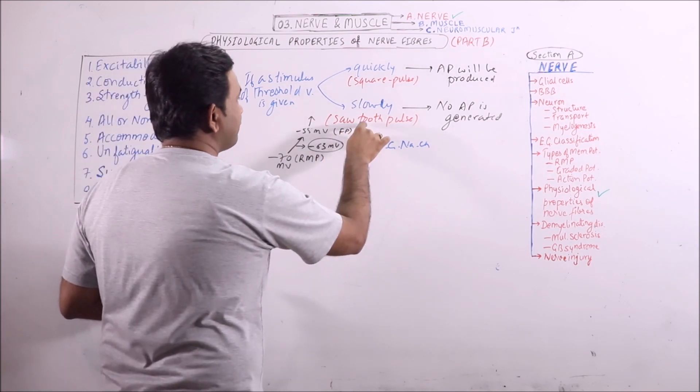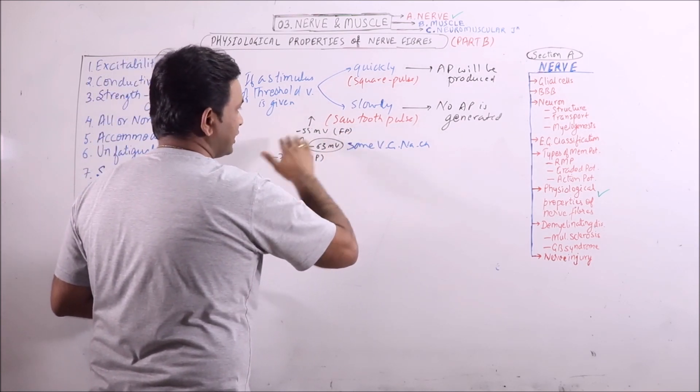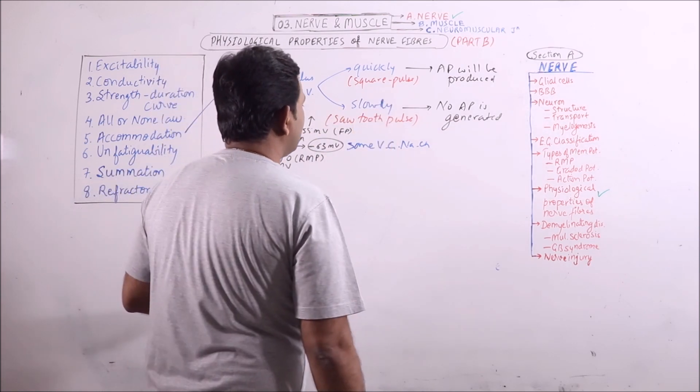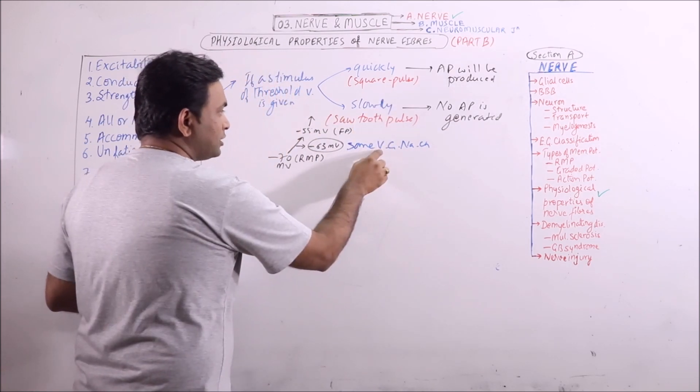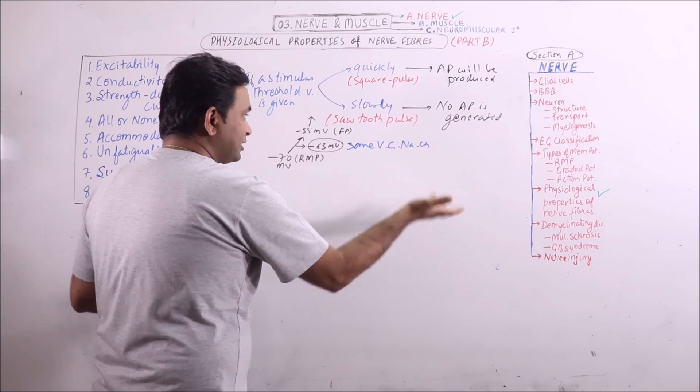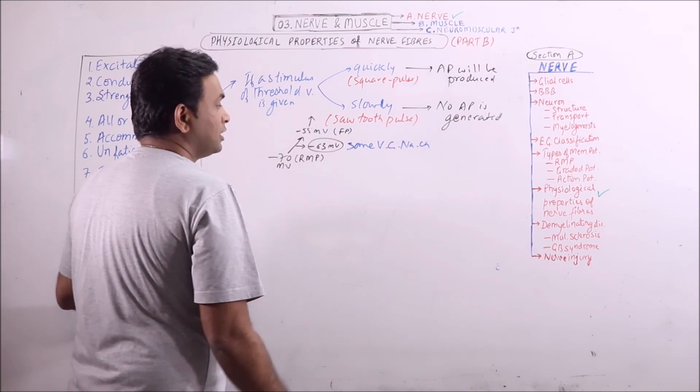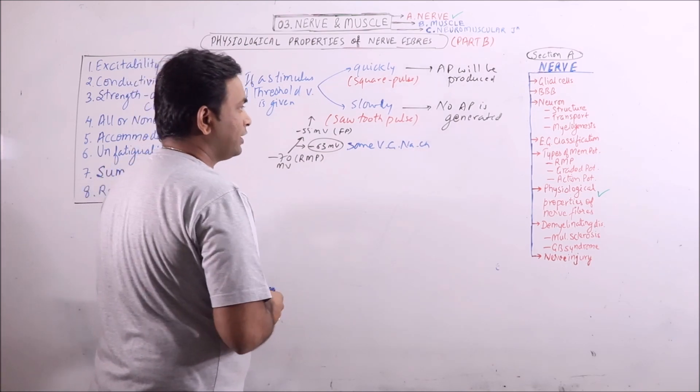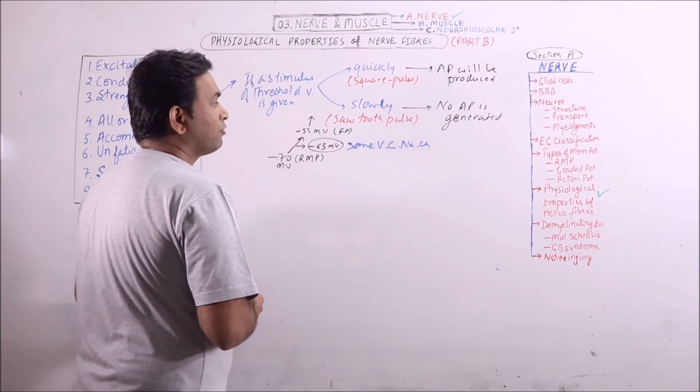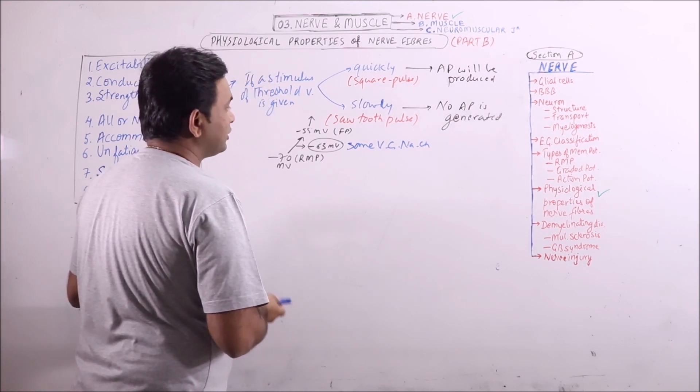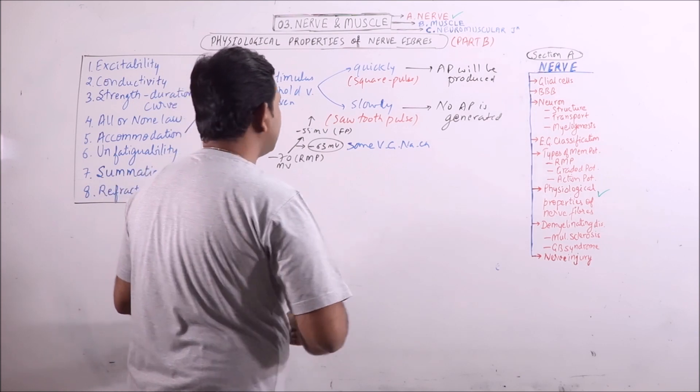In that case, if we are giving the stimulus that is rising very slowly towards the threshold value, then these voltage gated sodium channels in addition to some more voltage sodium channels will enter the inactivation phase and the sufficient number of voltage gated sodium channels will never be reached. So no action potential is generated.